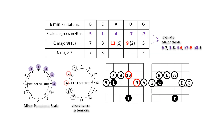The idea of superimposing a scale over a chord is to highlight certain notes and tensions. When superimposing the E minor pentatonic scale over a C major 7 chord, the shortcut is to use the major third interval between roots C and E as a reference to find 7, 3, 6, 2, 5 — the highlighted chord tones and tensions.